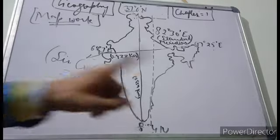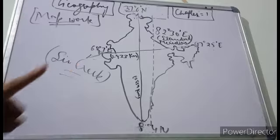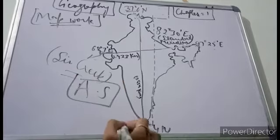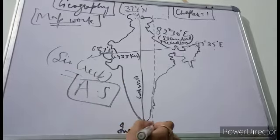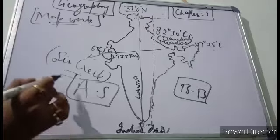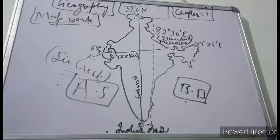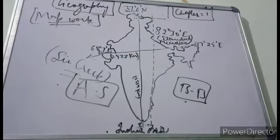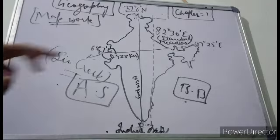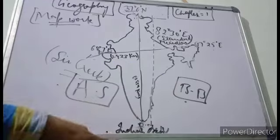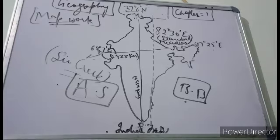India does most of its trade through sea routes. Three sides of India are covered by seas — the Arabian Sea on the west, the Indian Ocean below, and the Bay of Bengal on the east. Because India is covered by seas on three sides, about 90 percent of India's trade is done through these ocean regions, making India well connected to most parts of the world.